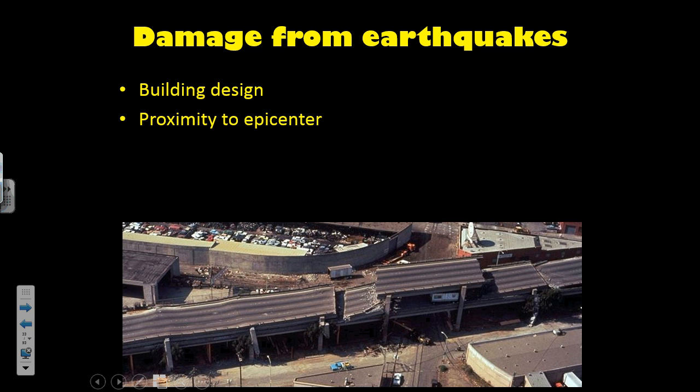The second factor is the proximity to the epicenter. As covered in the previous lecture, the closer we are to the earthquake epicenter, the more shaking is felt and the more damage occurs. This is a picture of Interstate 880 running through Oakland in 1989, where an earthquake caused about a mile of this elevated interstate section to collapse like a pancake. The majority of fatalities from that particular earthquake happened on this stretch of interstate.